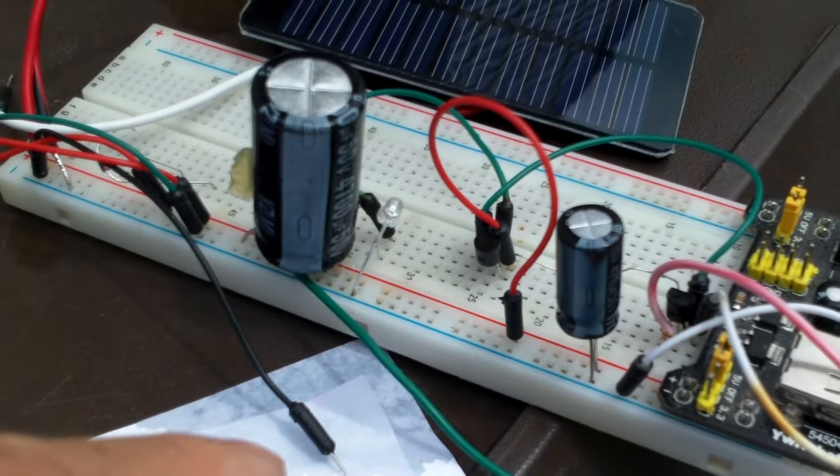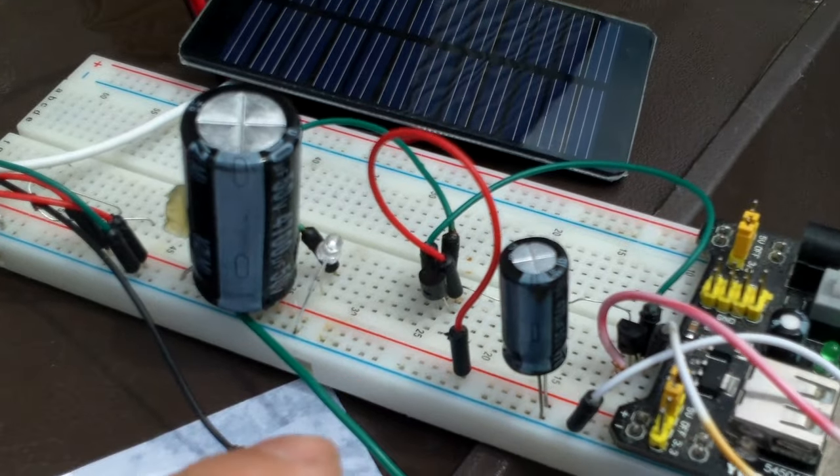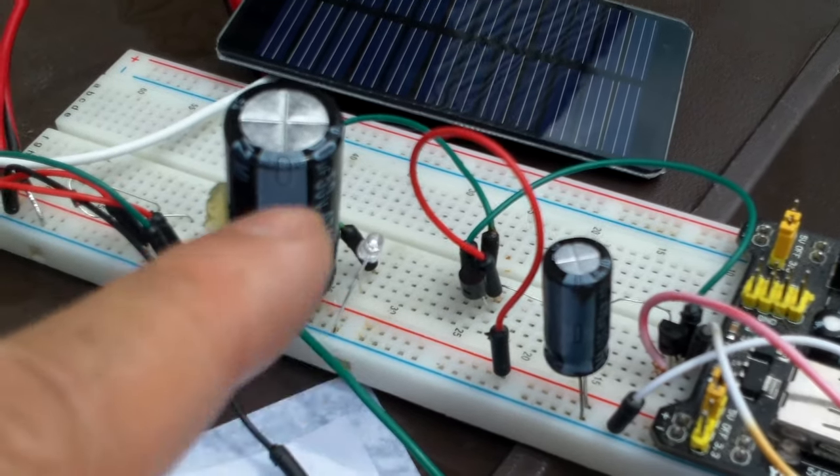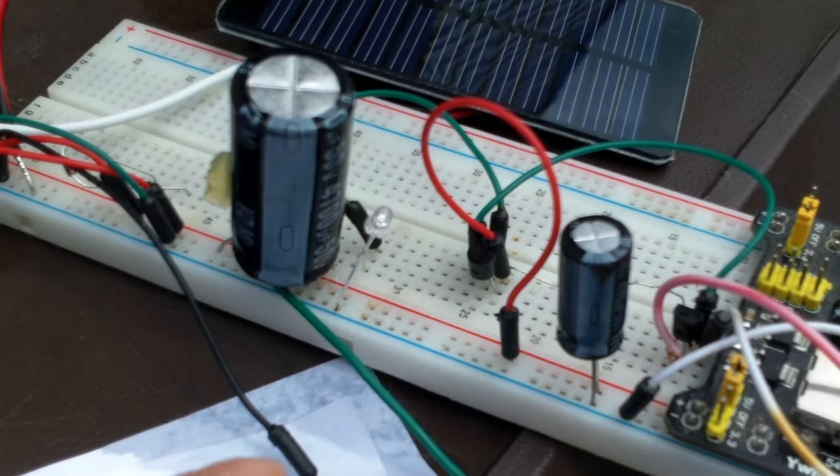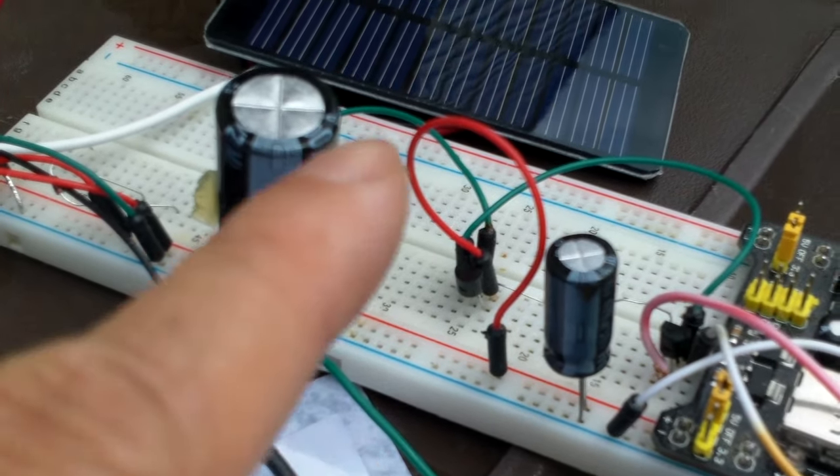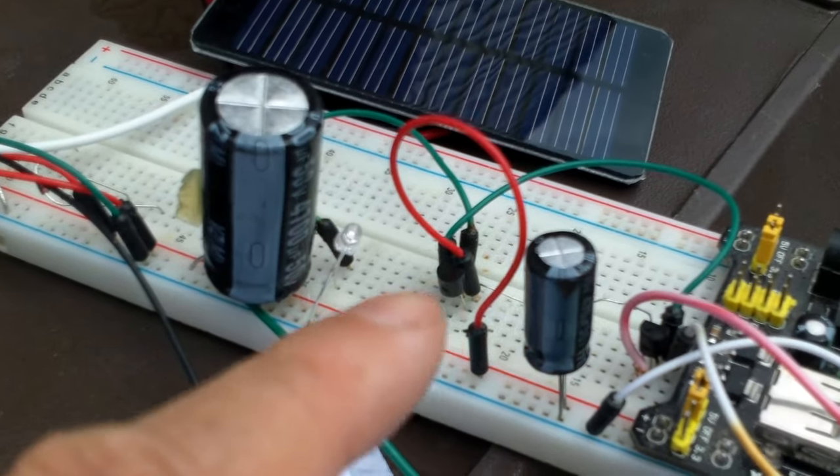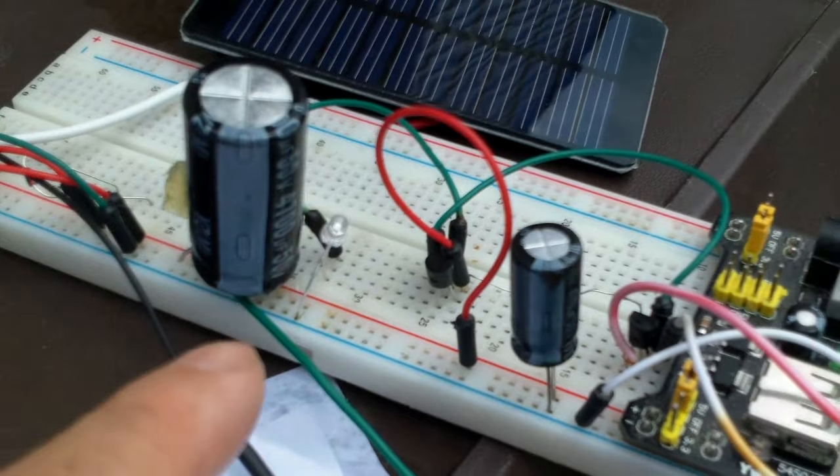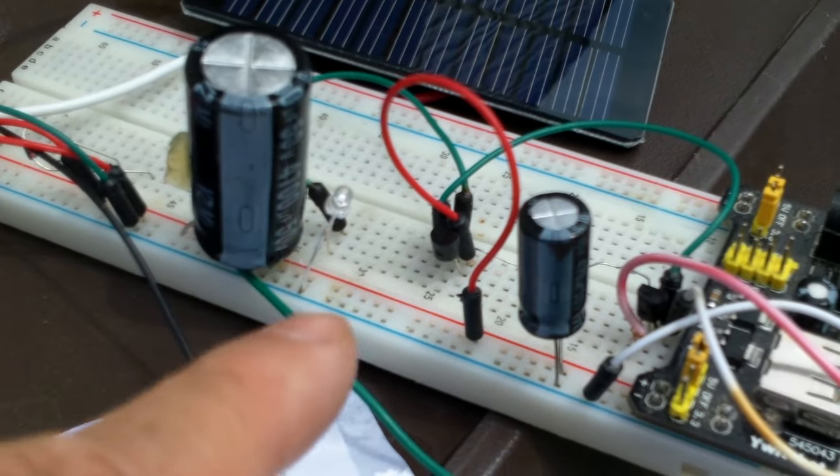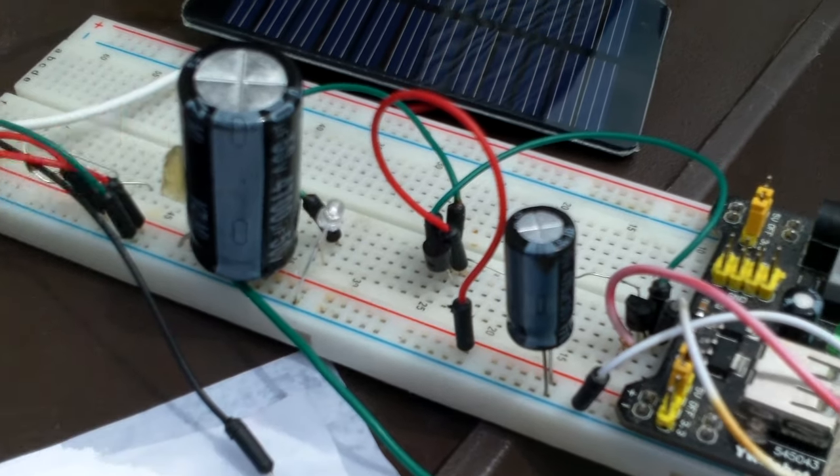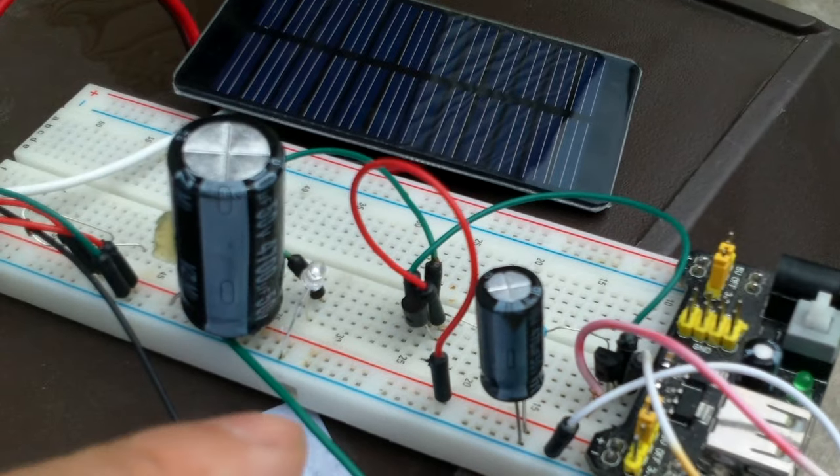When the charge is up to five volts or so, or actually a little over a volt and a half, the motor will turn. And then it will run until the voltage drops to about point seven, and then it would charge up again and the cycle repeats itself.